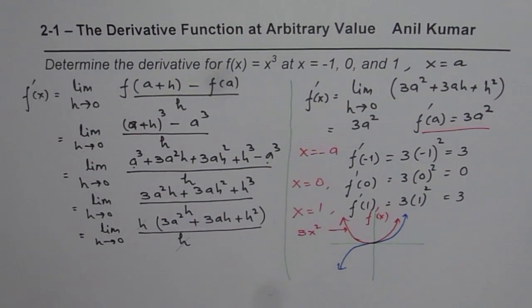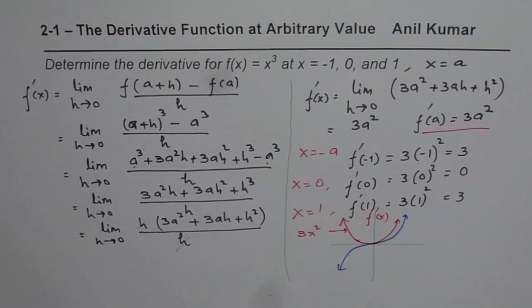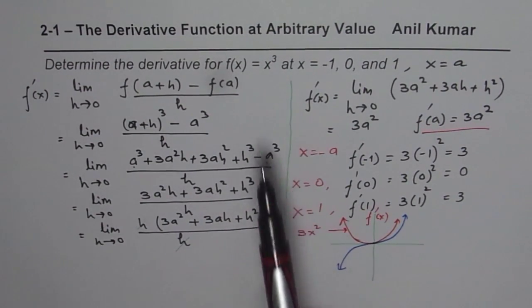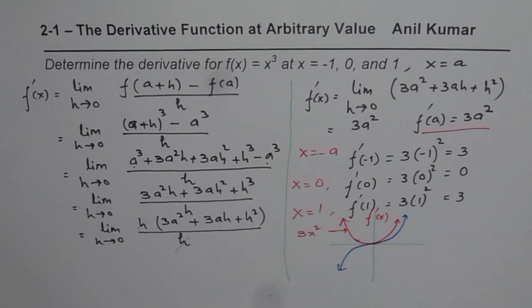So what you notice is that whenever you find derivative, the power decreases by 1. So for a cubic equation, derivative will be a quadratic equation. And that exponent 3, power is 1 less. So that may give you an idea of general formula for any polynomial equation.